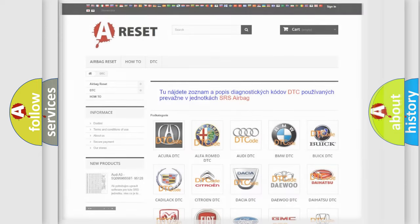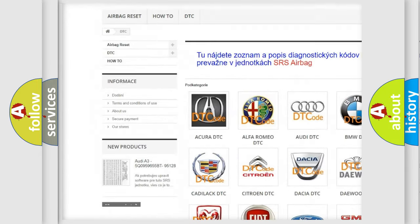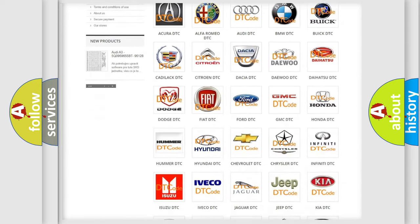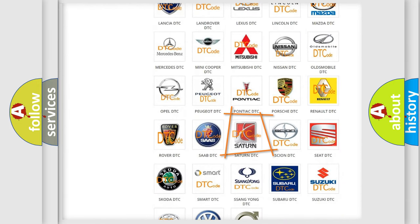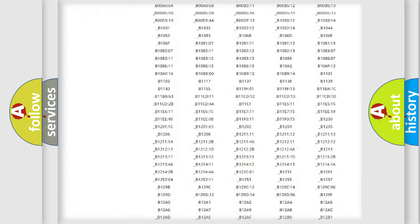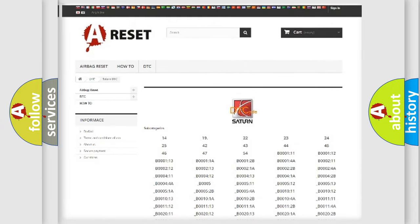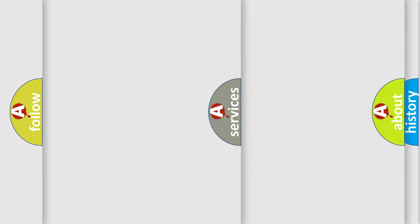Our website airbagreset.sk produces useful videos for you. You do not have to go through the OBD2 protocol anymore to know how to troubleshoot any car breakdown. You will find all the diagnostic codes that can be diagnosed in Saturn vehicles, and also many other useful things.